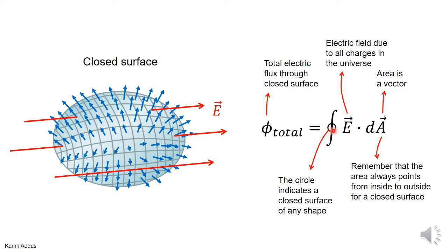Whenever you see a circle on the integration sign, it means the surface is a closed surface. And you will notice that this integration is exactly the integration used in Gauss's law — that's why we've been building up to reach this point.